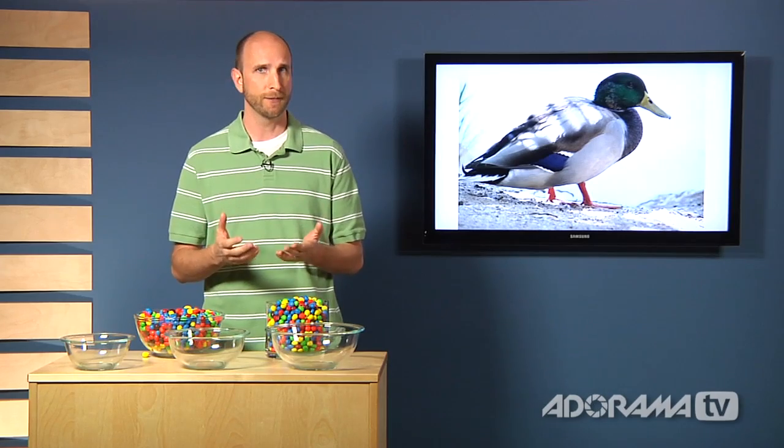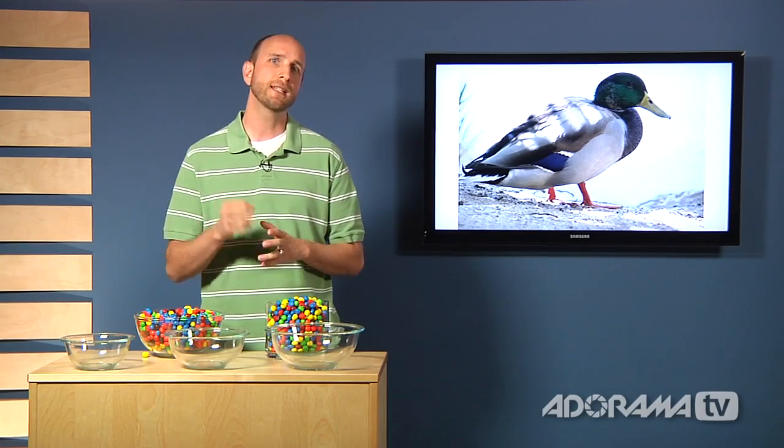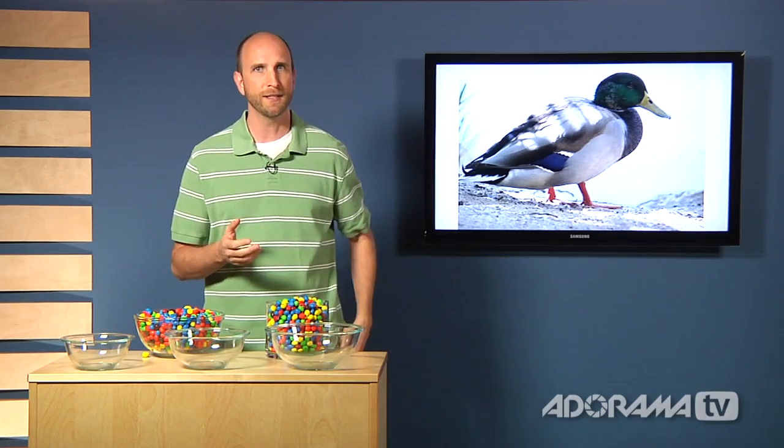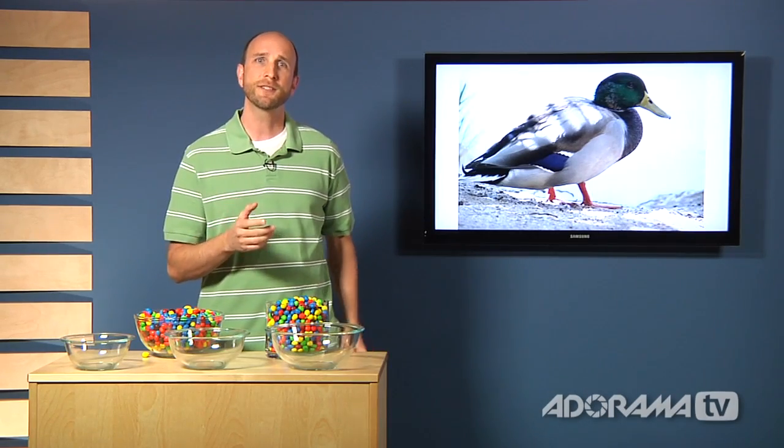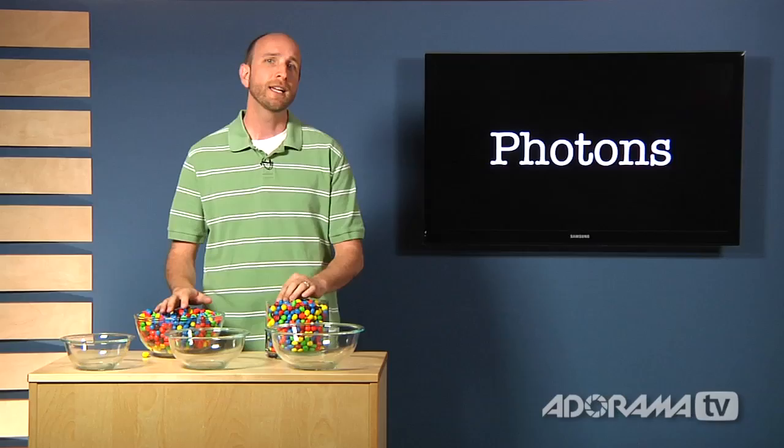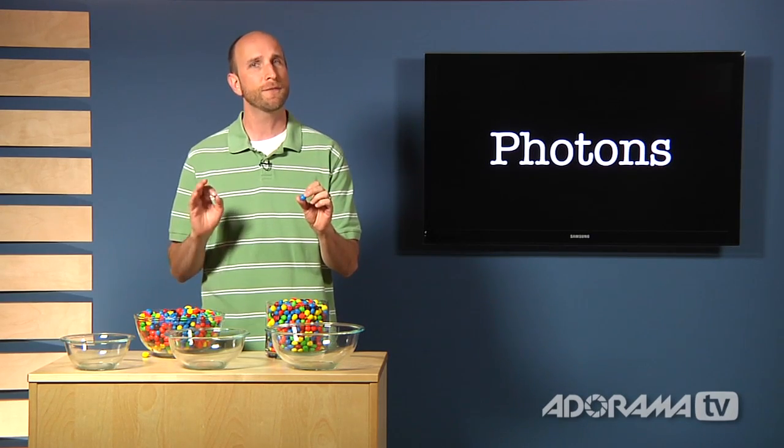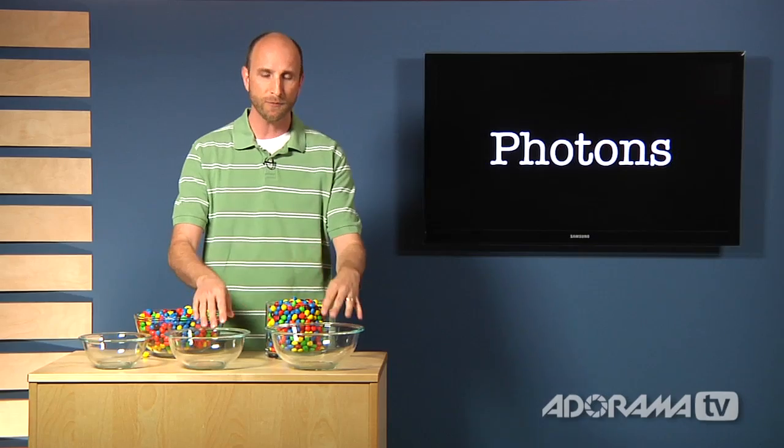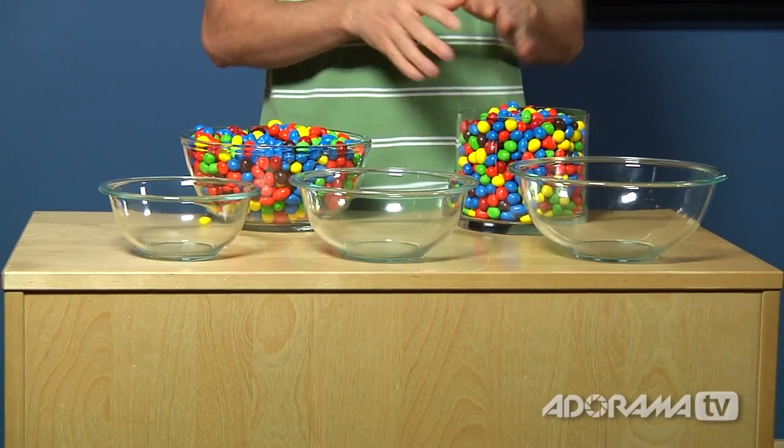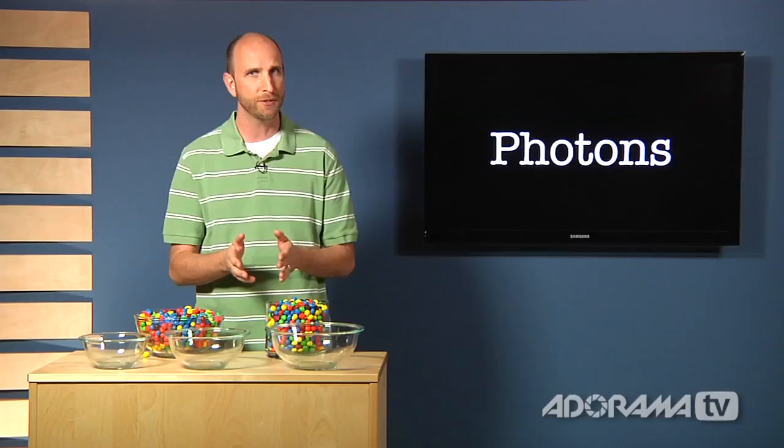Well light travels in little bundles of energy and those bundles of energy are called photons. Now the photosites on our sensor measure these photons to determine how bright something is. Now I have a bunch of little chocolate candies here and each one of these represents a photon. And I also have some bowls here and each one of these represents a photosite. Now the larger the photosite is, the more photons it can measure.